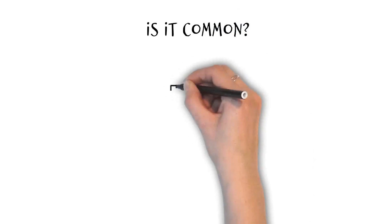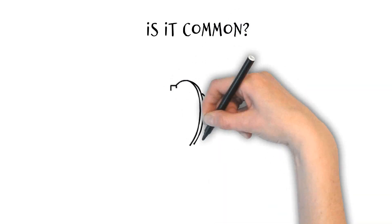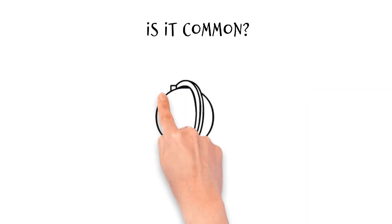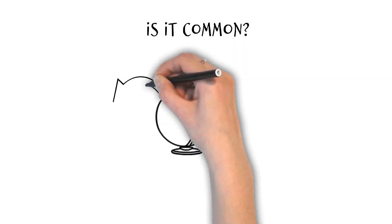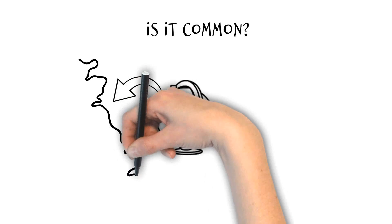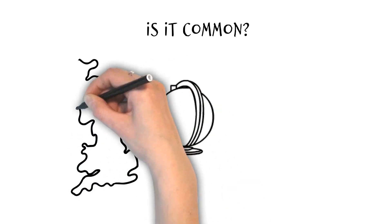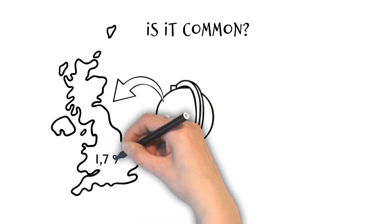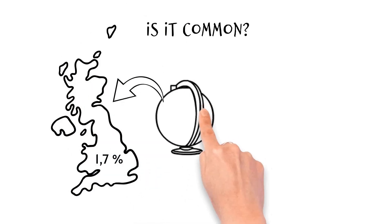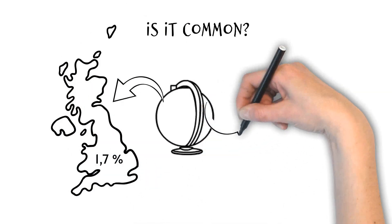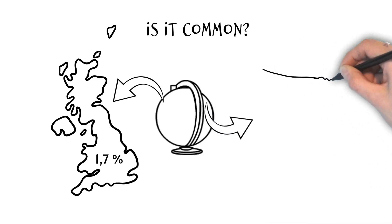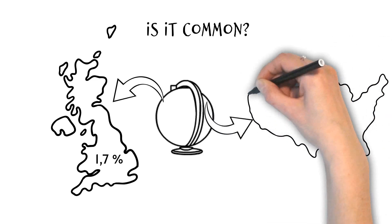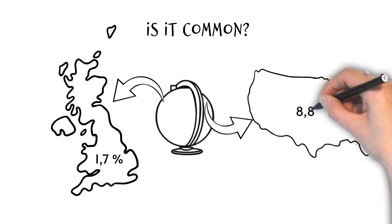ADHD is a relatively common disorder, although this can vary from country to country. In the UK, it's estimated that approximately 1.7% of children have a diagnosis of ADHD, whereas studies from America have reported rates of up to 8.8%.